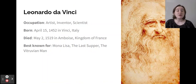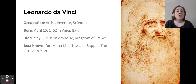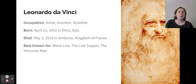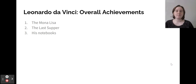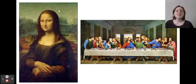Our next figure is Leonardo da Vinci. He was an artist, inventor, and scientist. He was born April 15th, 1452 in Vinci, Italy, and he died May 2nd, 1519 in Amboise in the Kingdom of France. He was best known for the Mona Lisa, the Last Supper, and the Vitruvian Man. His overall achievements were the Mona Lisa, the Last Supper, and his notebooks in which he wrote down hundreds of paintings, inventions, and everything else. On the left is the Mona Lisa, and on the right is the Last Supper.